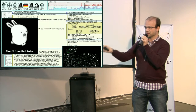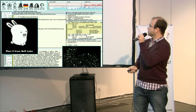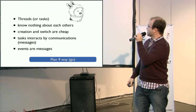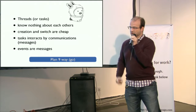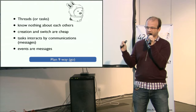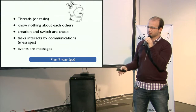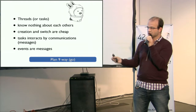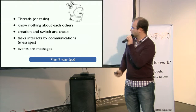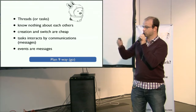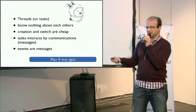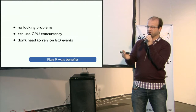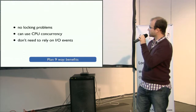In Plan 9 you have threads — or rather what we call tasks in other systems — which are lightweight threads where switching and creation is very cheap. Threads don't know anything about each other; there is no lock. A thread only communicates with others using a channel. A channel is a way to pass messages from one thread to another, or one task to another. Events are considered as just simple messages. So you can have an event loop waiting on IO events, but it will just be a message passed to your thread using a channel.